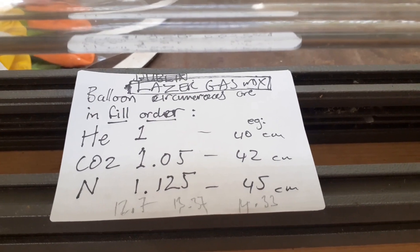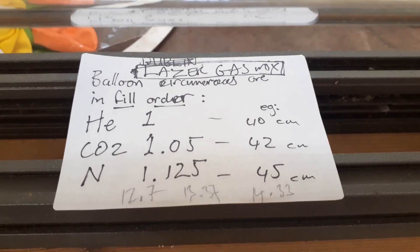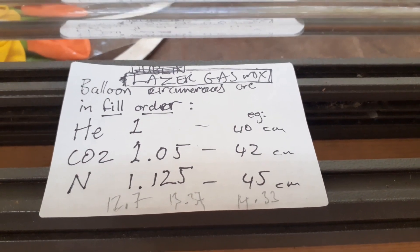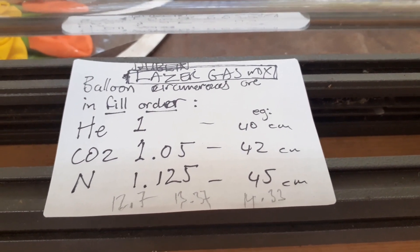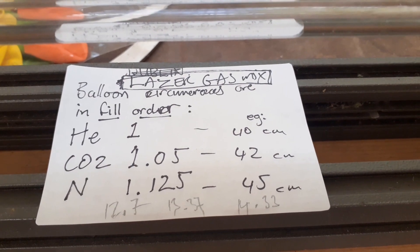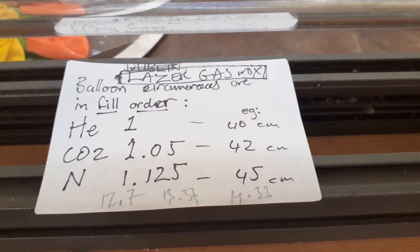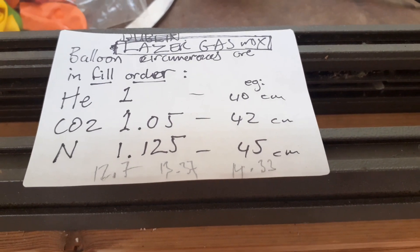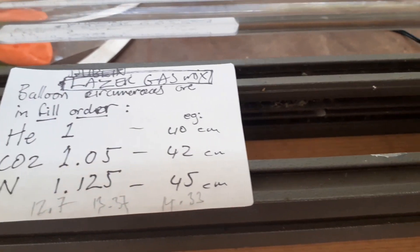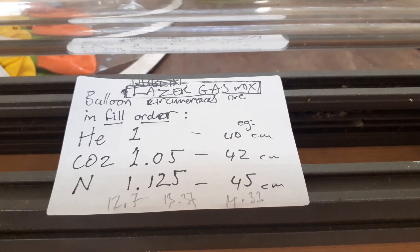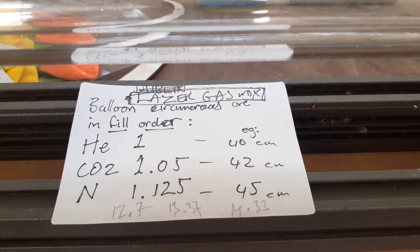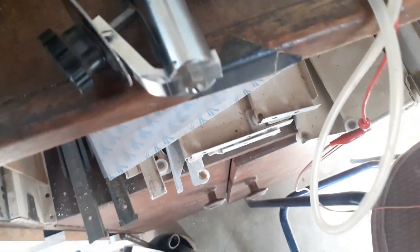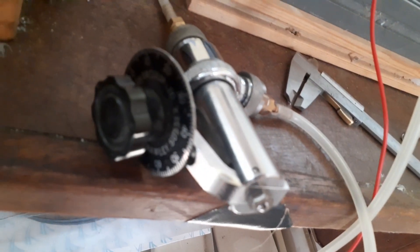So this is laser gas mix balloon diameters by ratio. It has to be filled in the order helium, CO2, nitrogen. The ratios are the first ones, example circumferences in the second, and then those ones down there are actually diameters derived from those ones. Easy enough, good. So gas comes out there around through the needle valve.